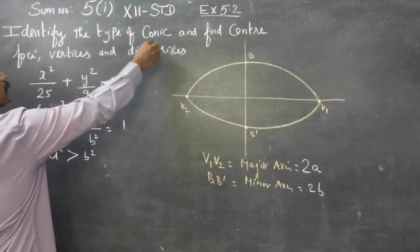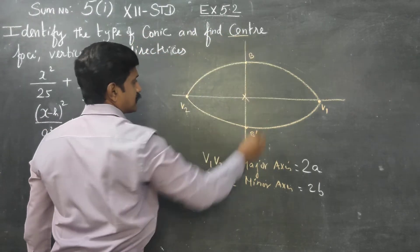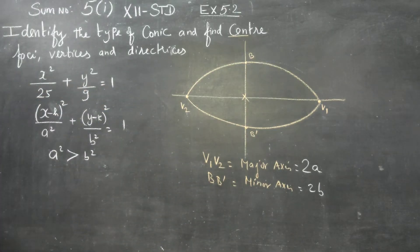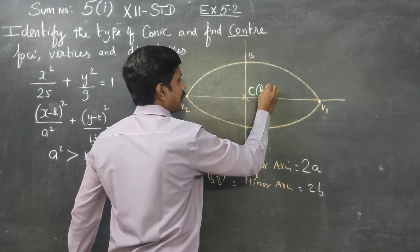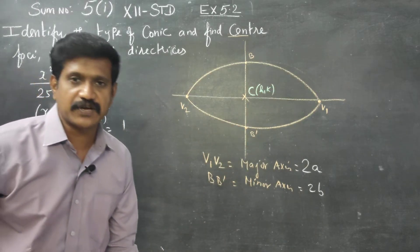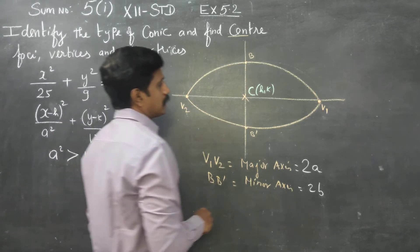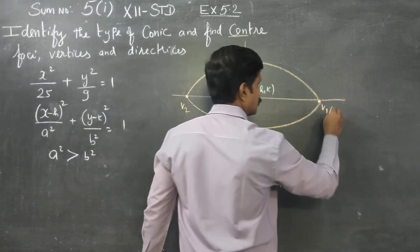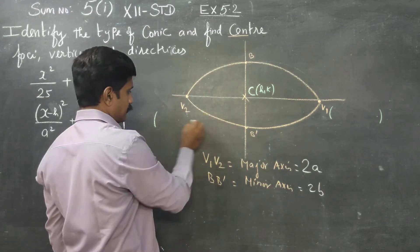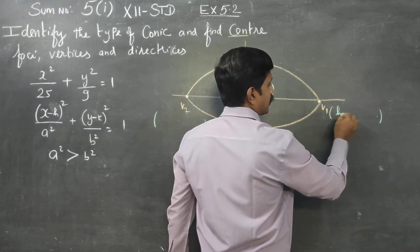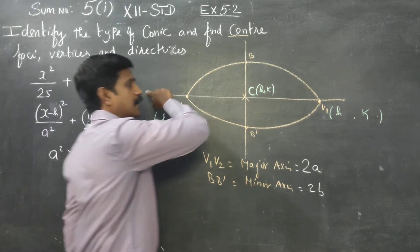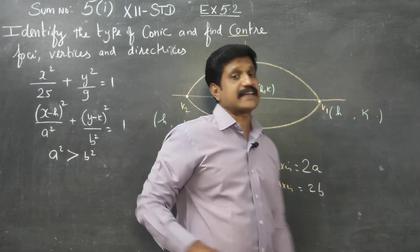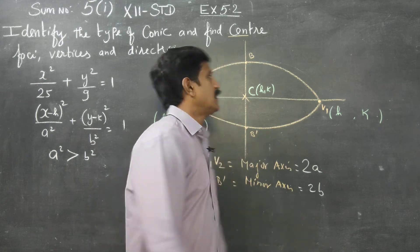Now let's find the center. The center formula is (h, k). For a horizontal ellipse, the center is at (h, k). There are 2 vertices, and since the major axis is along the x-axis, they lie along the horizontal direction.